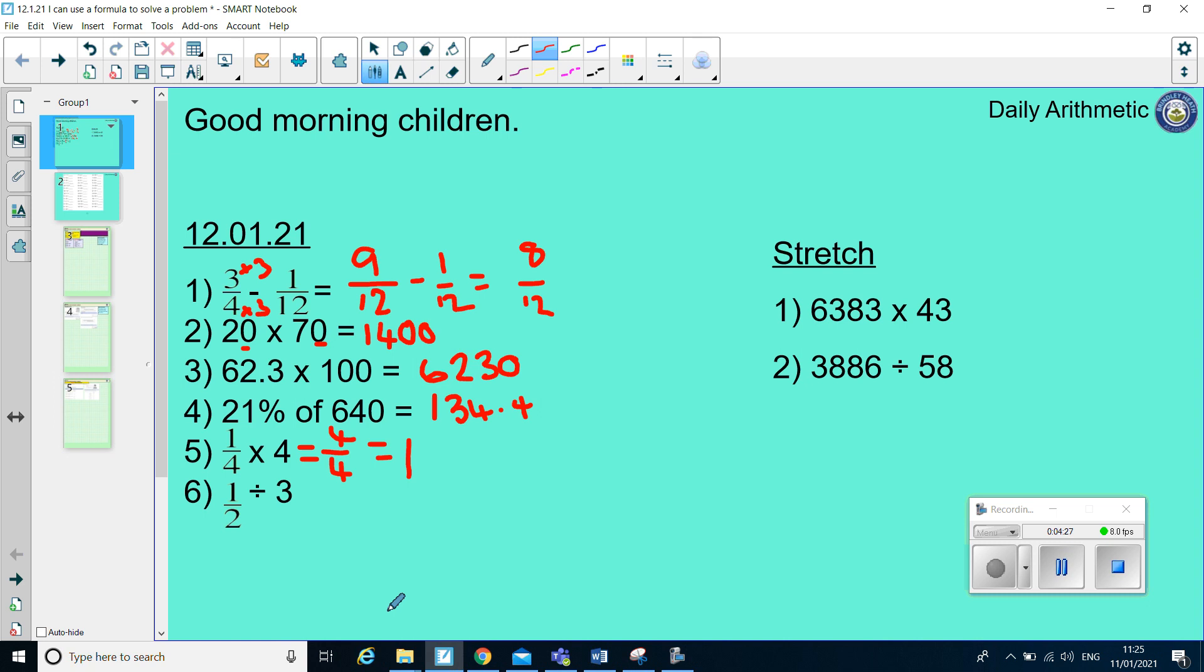Question 6. A half divided by 3. When I'm dividing a fraction by a whole number, I like to remember d for divide and d for denominator. So, my numerator stays the same. My 1 on the top stays the same. And all I do on the bottom is 2 times 3. So, 2 times 3 is 6. So, my answer is 1 sixth.